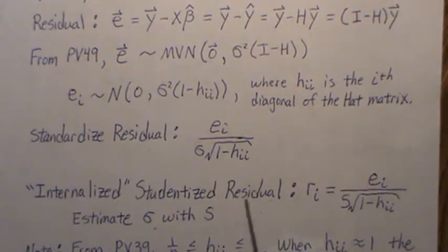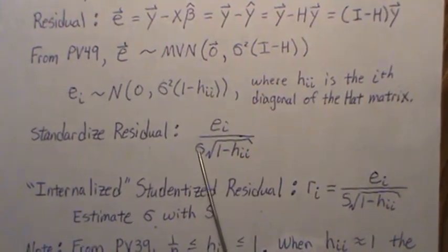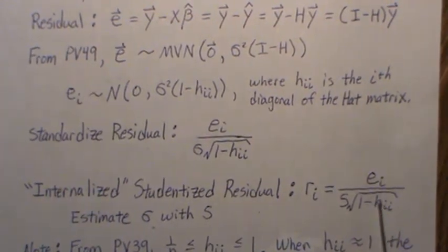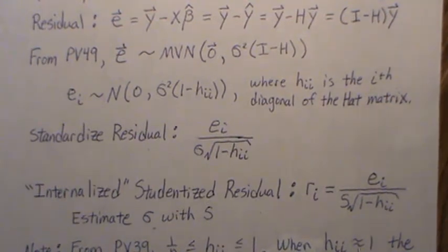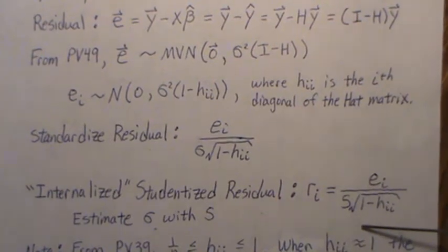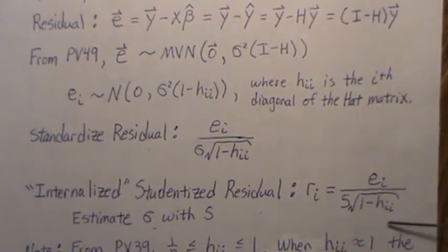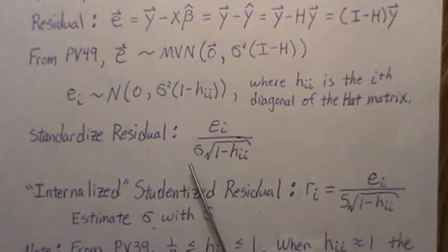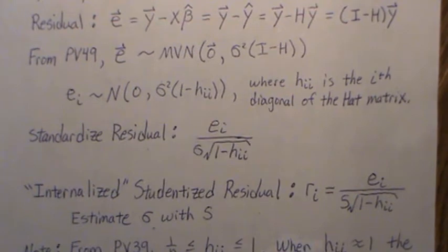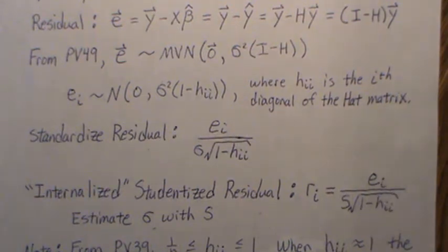Most people think that once you estimate with the sample standard deviation this magically becomes a t-distribution — but in this case it's not. The top is a standard normal and the bottom is the square root of a chi-square divided by degrees of freedom, which looks like a t, but the numerator and denominator are not independent, so it's not technically a t-distribution. It's t-like, and you can kind of pretend it is, but that's actually what we deal with in part two — we change it just a little bit to make it a true t-distribution.